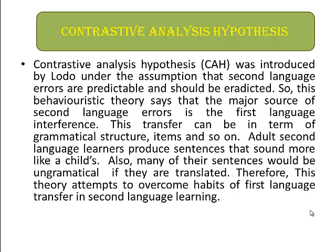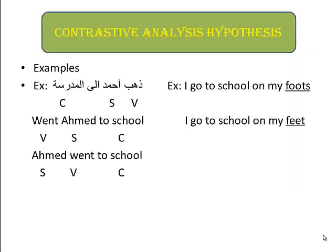Adult second language learners produce sentences that sound more like a child's. Also, many of their sentences would be ungrammatical if they are translated. Therefore, this theory attempts to overcome habits of first language transfer in second language learning.